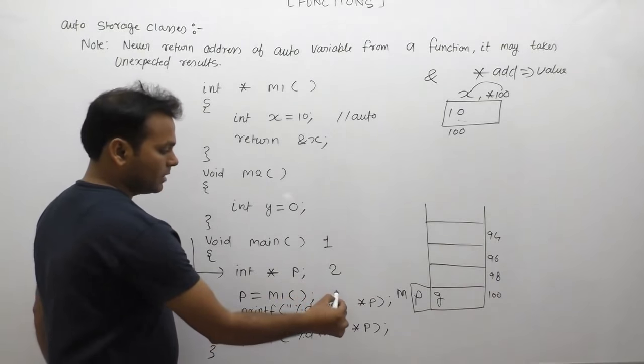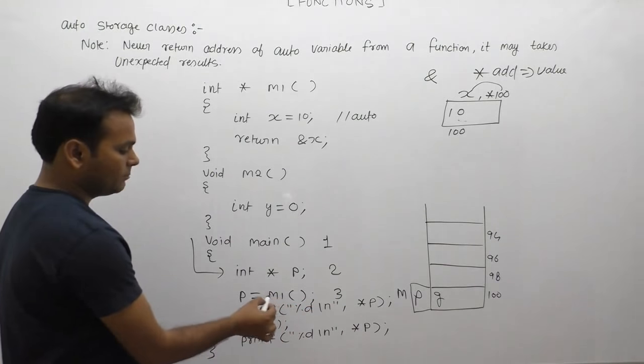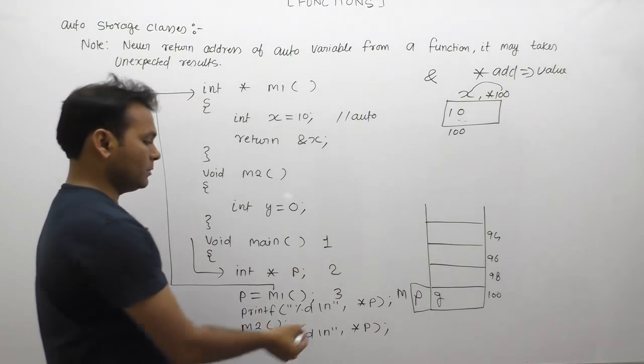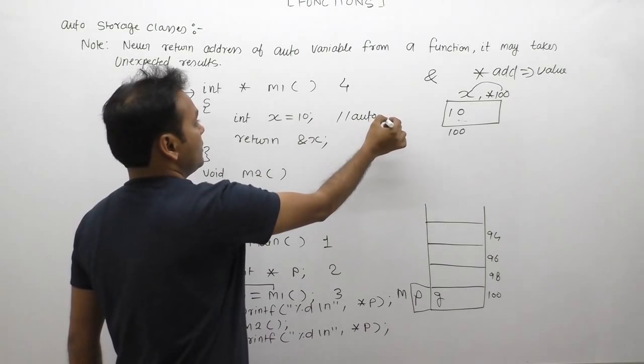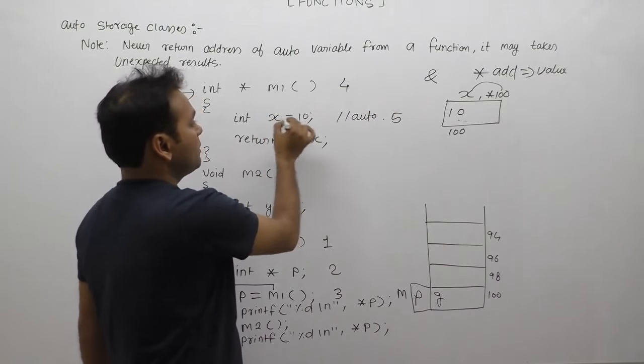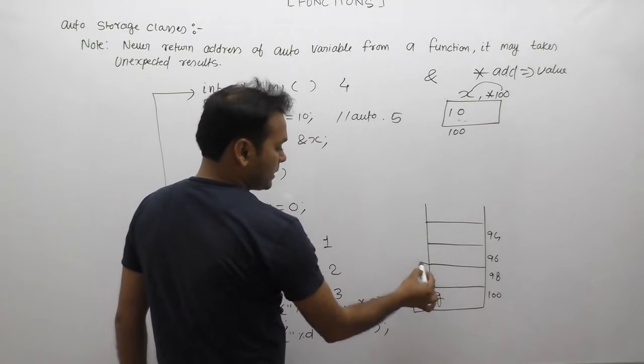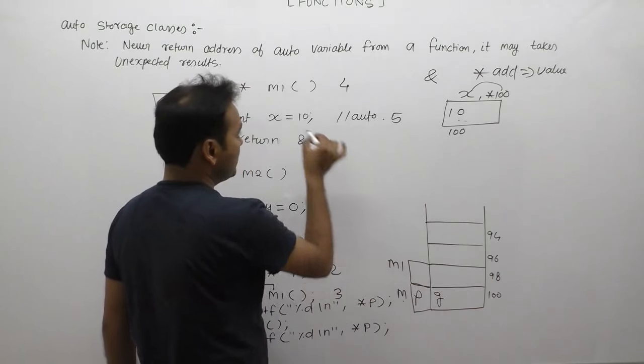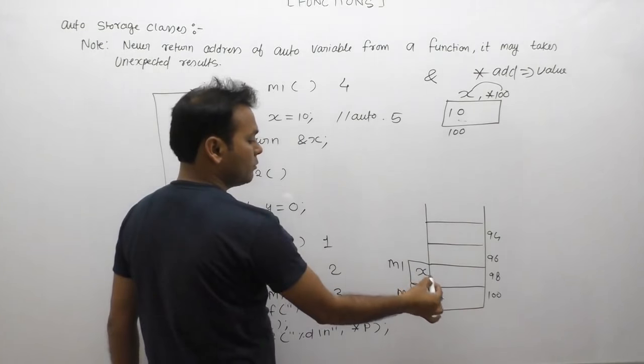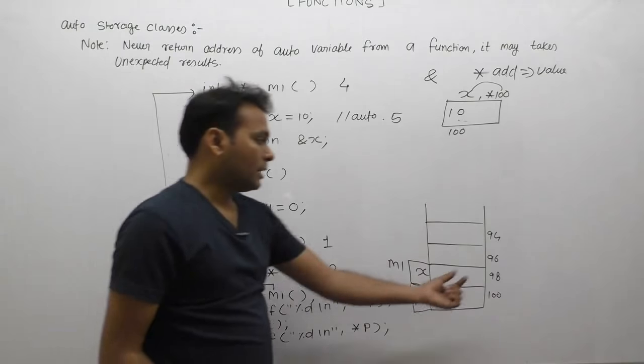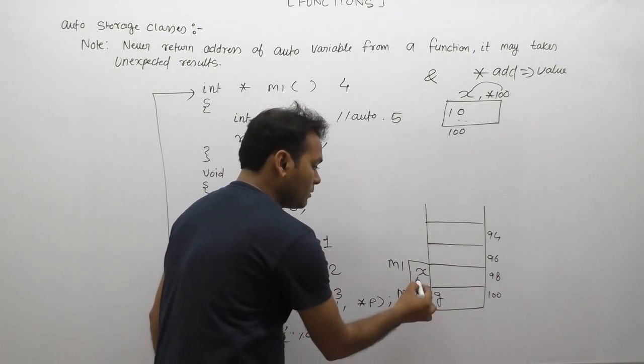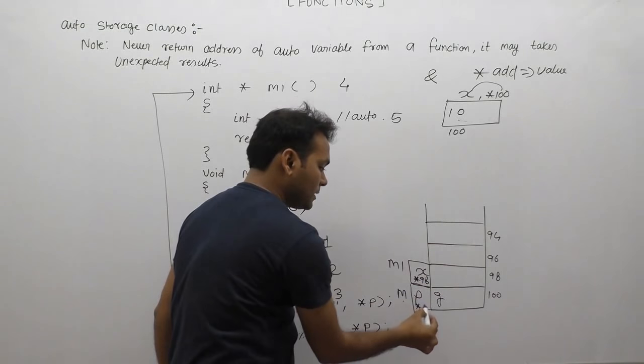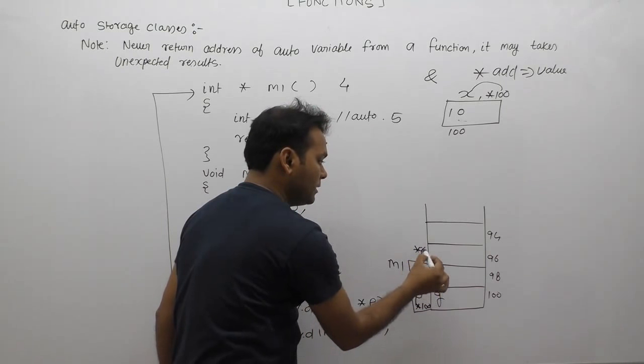Third case: call m1. M1 function call, control sends inside body of m1. Then memory allocation of x. Stack loads function m1, this is main, this is m1. M1 allocates memory for local variable x. As we know, if this location address is 98, it is according to previous case: star 98, same as maybe star 100, maybe star 96 and so on.